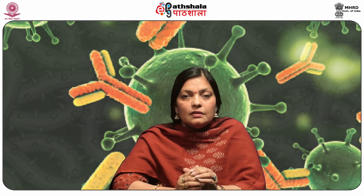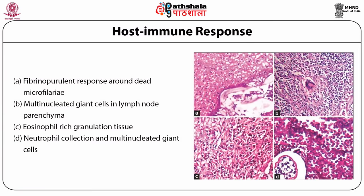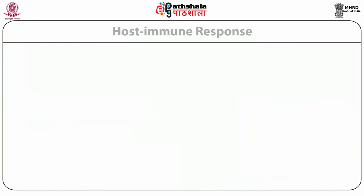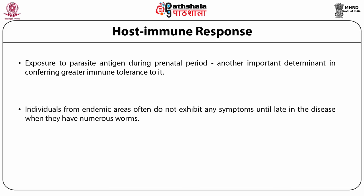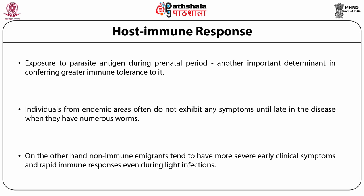In the acute phase of filariasis, antigens from female worms elicit inflammatory responses. Different kinds of immune responses in the host body include infiltration of neutrophils, eosinophils and accumulation of giant cells around dead microfilariae. Exposure to parasite antigen during the prenatal period is another important determinant in conferring greater immune tolerance. Individuals from endemic areas often do not exhibit any symptoms until late in the disease. In contrast, non-immune migrants tend to have more severe early clinical symptoms and rapid immune responses even during light infections.